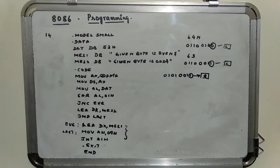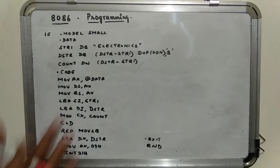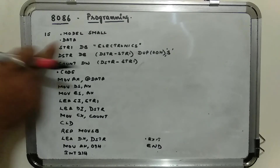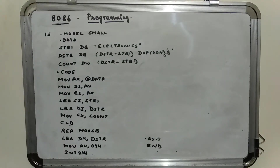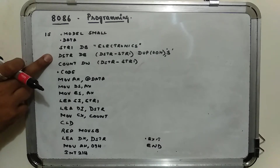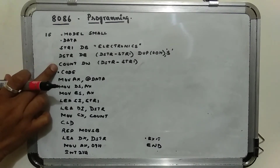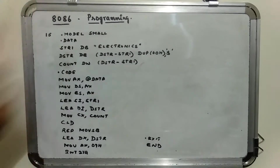So the second string 'given byte is odd' is displayed. If you take a different byte, you will get a different string displayed on the console. Now in this program, we are transferring a string from one memory location to another. We are declaring our string as 'electronics' and declaring the destination where the string has to be transferred, as well as the count — this count indicates the number of characters in the string.